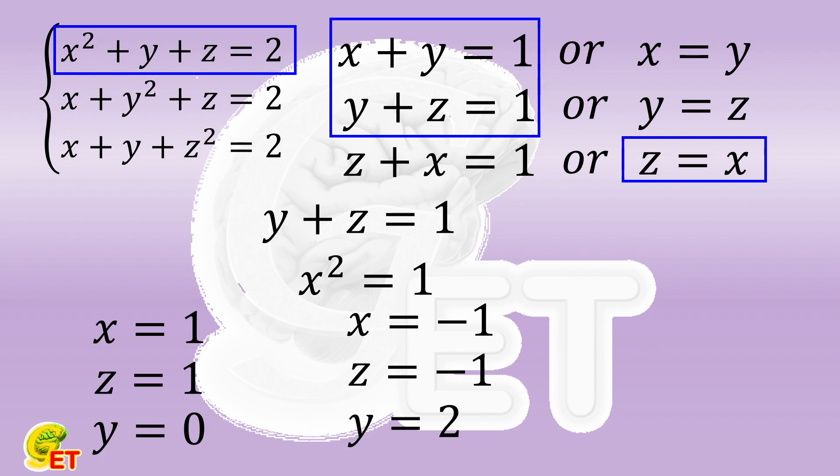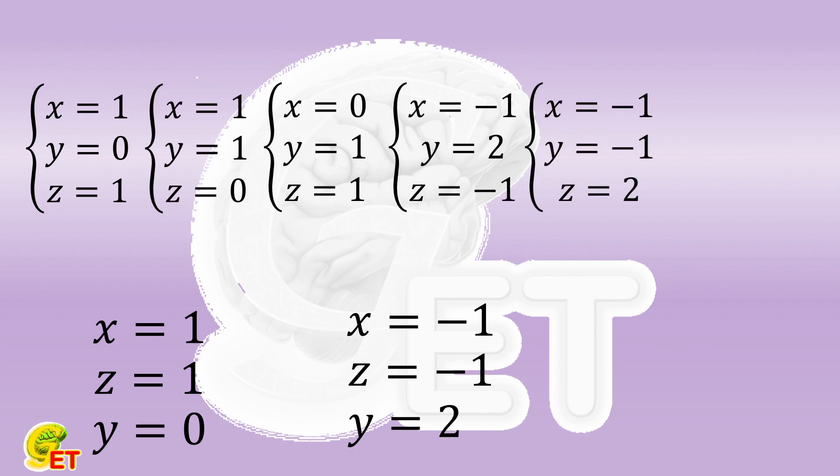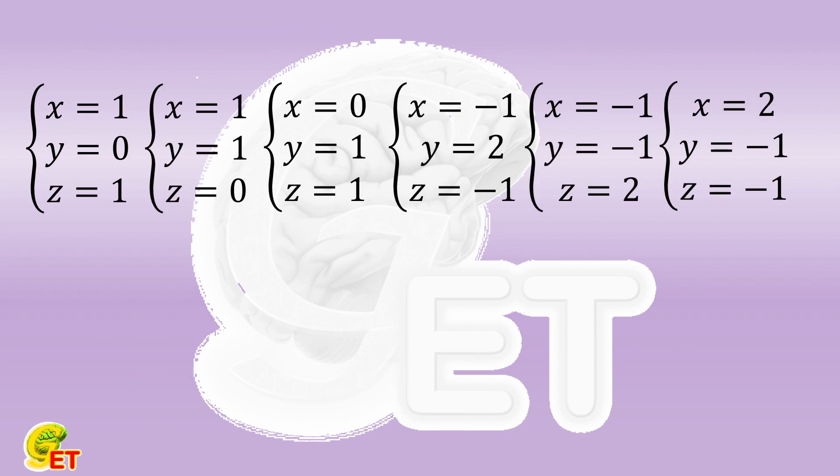Due to the rotational symmetry of x, y, and z, we actually get six sets of solutions. Together with the two sets of solutions obtained before, we in fact have found a total of eight sets of solutions to the original equations. Thank you for watching, and see you next time.